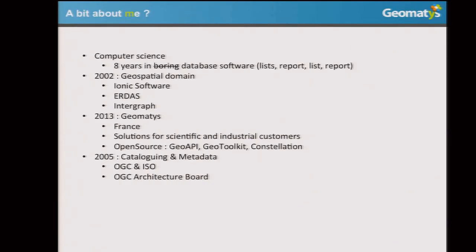And then, at the beginning of this year, I changed and joined Geomatis. It's a company located in the south of France — a nice place. They have a lot of open source components, and they are building solutions mainly for the scientific domain and industrial customers. So it's a set of open source components, like GeoAPI, GeoToolkit, and Constellation.